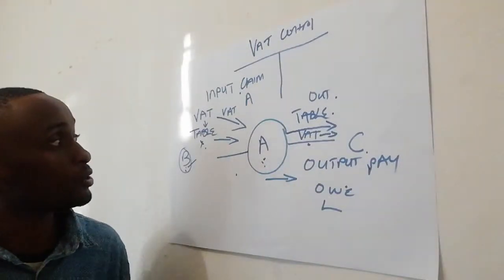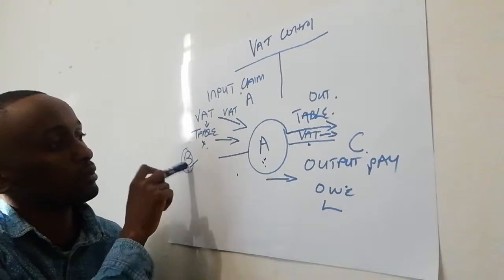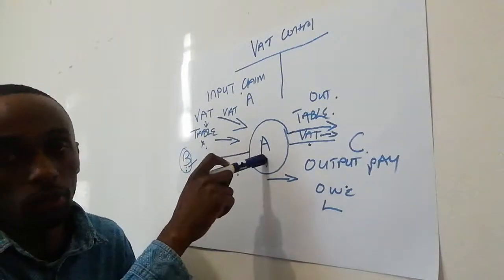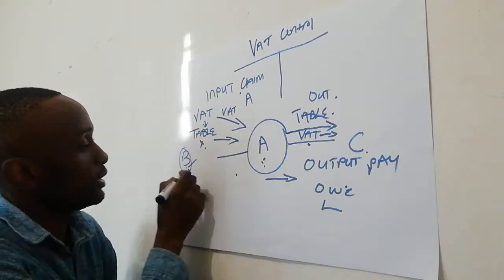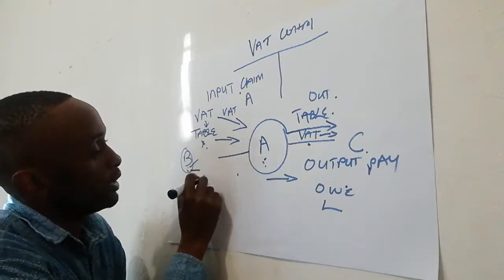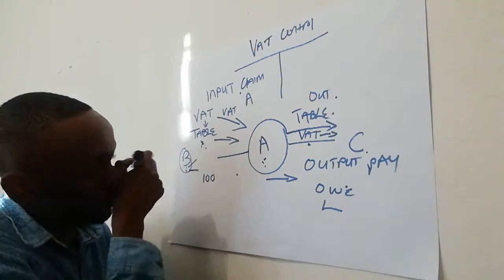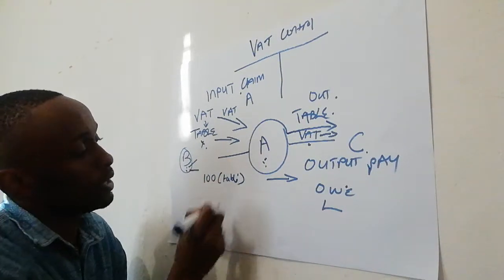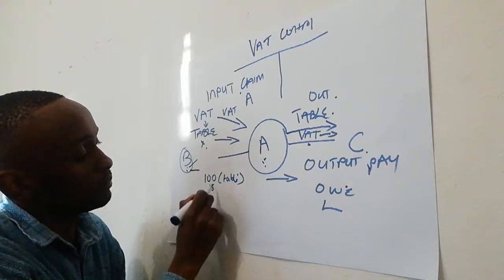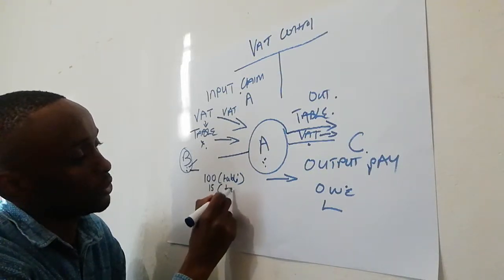Remember I told you, when you buy something it's input VAT, right? So what you are buying - this guy is going to sell it to you at 100. That's the price of the table. He is going to add 15%, that's the tax portion.